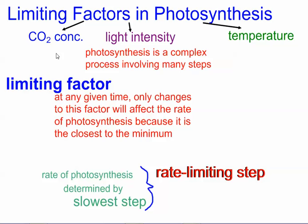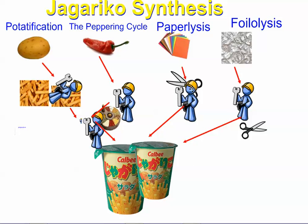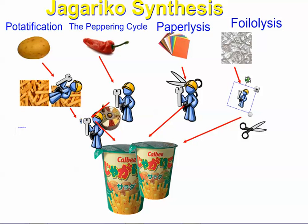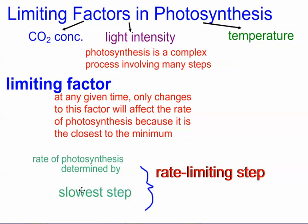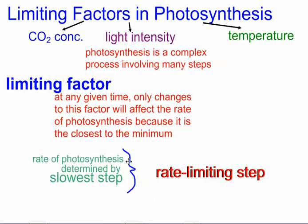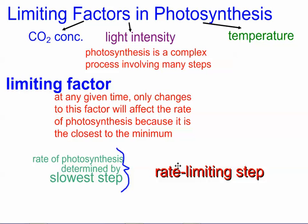So back to the analogy — this worker might be closest to minimum efficiency, meaning the foil step is the rate limiting step for Jagariko production. Similarly, the rate of photosynthesis is always determined by the slowest step, and that slowest step at any given point is called the rate limiting step — I'll refer to that as RLS from here on.